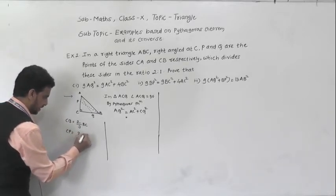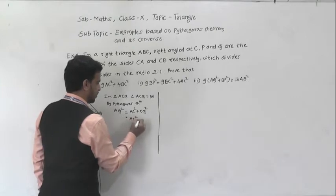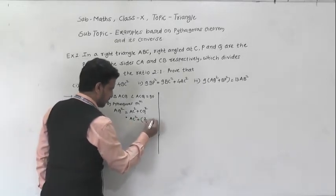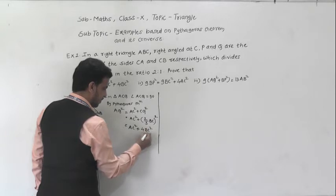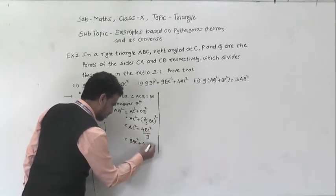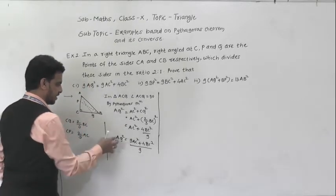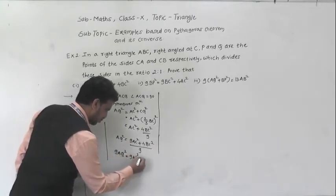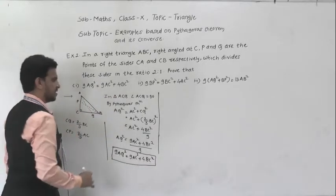Substituting the value: AQ squared equals AC squared plus CQ squared, where CQ equals two thirds BC. So AQ squared equals AC squared plus four BC squared by nine. Making the same denominator, we get nine AC squared plus four BC squared divided by nine equals AQ squared. Shifting the nine gives us nine AQ squared equals nine AC squared plus four BC squared. This is the proof of the first part.